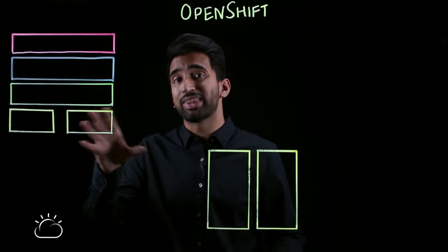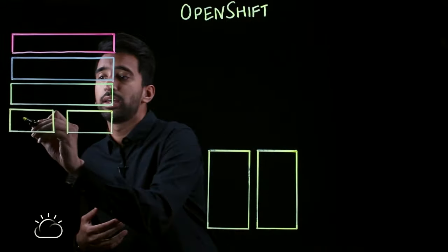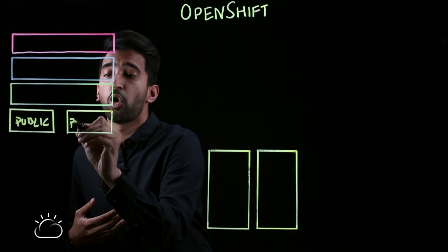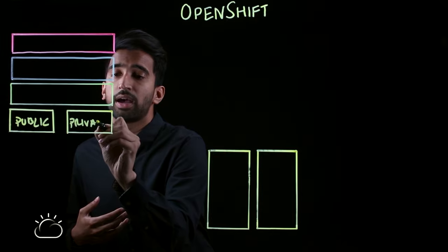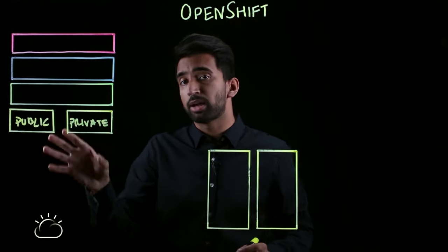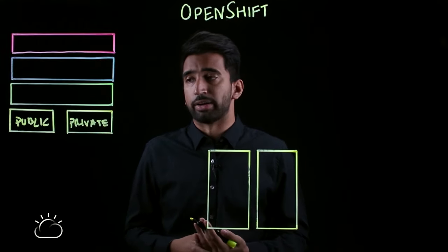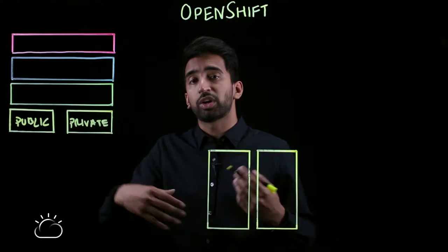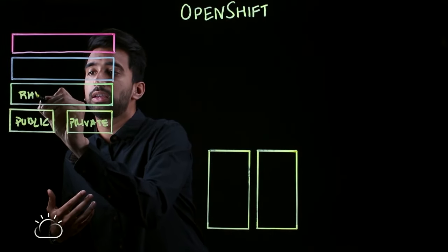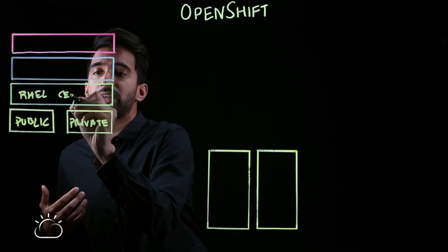Let's take a look at what the architecture of installing and working with OpenShift would look like. One of the big advantages is being able to take advantage of public or private resources for running OpenShift. That includes bare metal or virtualized hardware, whether it's on-prem or on a cloud provider. On top of that, we're going to have the operating system, which is generally Red Hat Enterprise Linux, but you can also use CentOS when working with OKD.